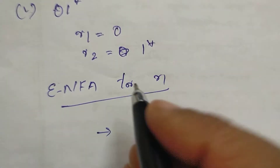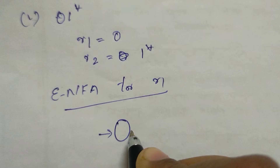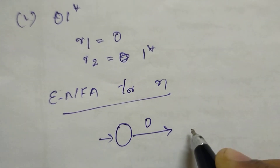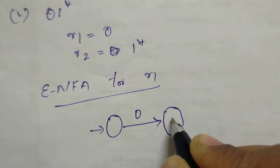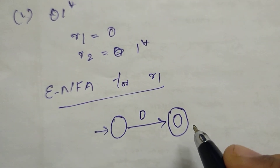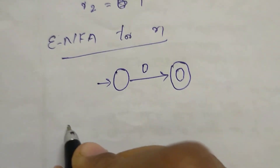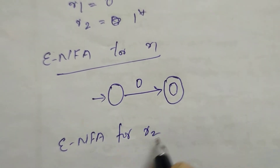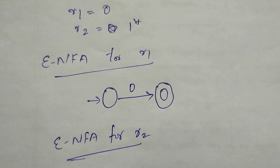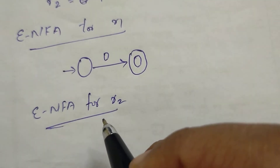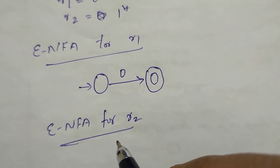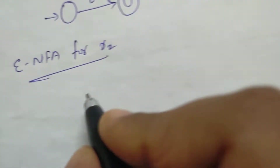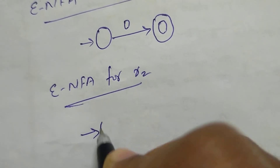Here is the final state for R1. Next, we want to write the Epsilon NFA for R2. R2 is 1 star. L star — sorry, R star — corresponds to Kleene star closure. R star is corresponding, with an epsilon move.